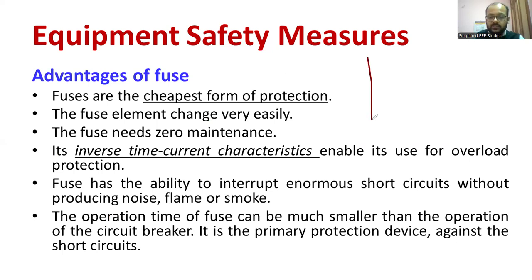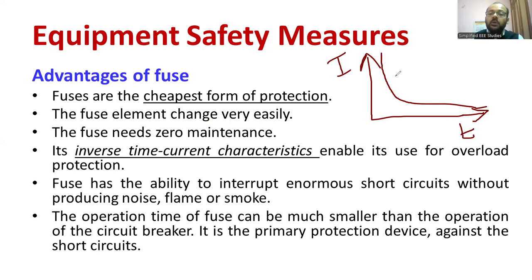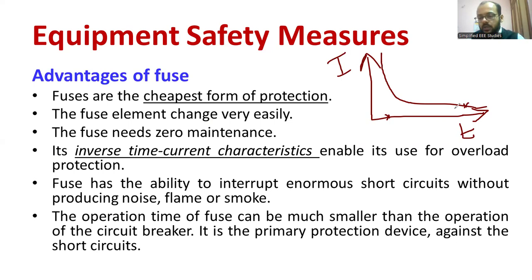What is meant by inverse time-current characteristics? If you plot current versus time, you get a hyperbolic graph. For a high magnitude of current, the fuse will act very fast. That is what is called the inverse characteristic of current and time. For a lower fault level, it will take a little more time to act — no problem. This is called inverse time-current characteristics. These are the important advantages of the fuse.